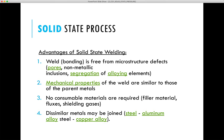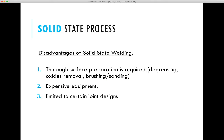However, each process has its disadvantages. Solid state welding equipment is typically quite expensive, and the processes are limited to certain joint designs such as lap joints or butt joints. It is also difficult to perform non-destructive testing on these materials because the metallurgical bond cannot be easily identified visually. So they are limited to certain operating conditions as well.